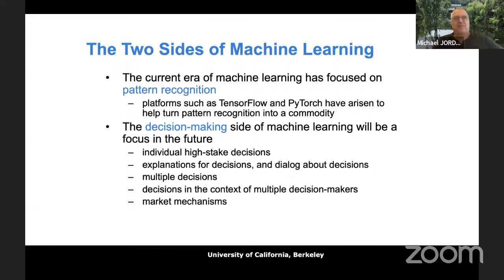Pattern recognition is just input-output mapping — perhaps with dimension reduction or feature finding — but that's not decision making, and it's not dealing with interactions between agents. People in the ML field say reinforcement learning solves the other problems, but RL is just dynamical optimization. What I want to emphasize is the decision-making side, which goes back centuries in statistics — formalized in the 1930s by Blackwell, von Neumann and others, linking it with economics.